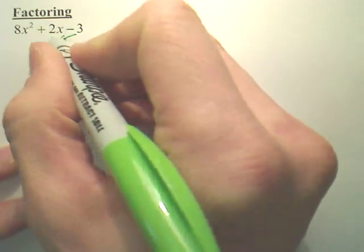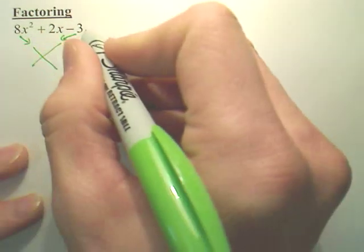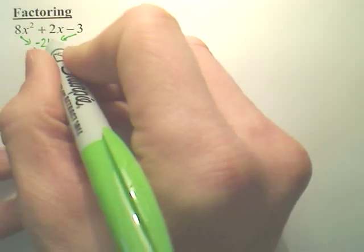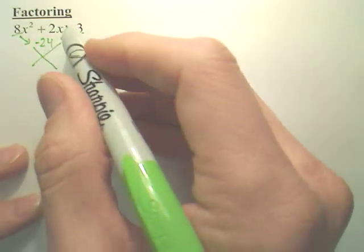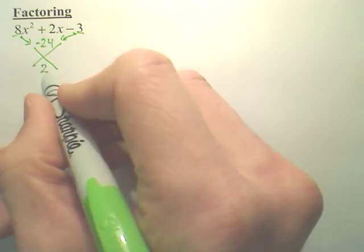You take this number and this number, multiply them, and you get negative 24. So you take these two numbers, multiply, and get negative 24. And you take the middle number and it drops to the bottom.